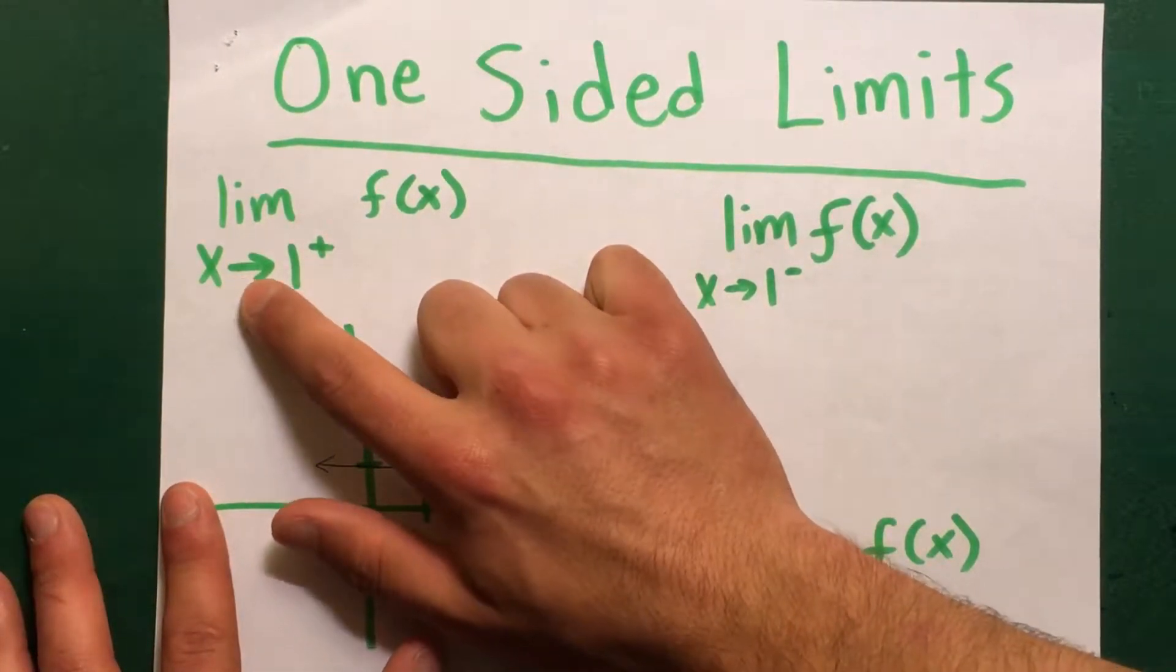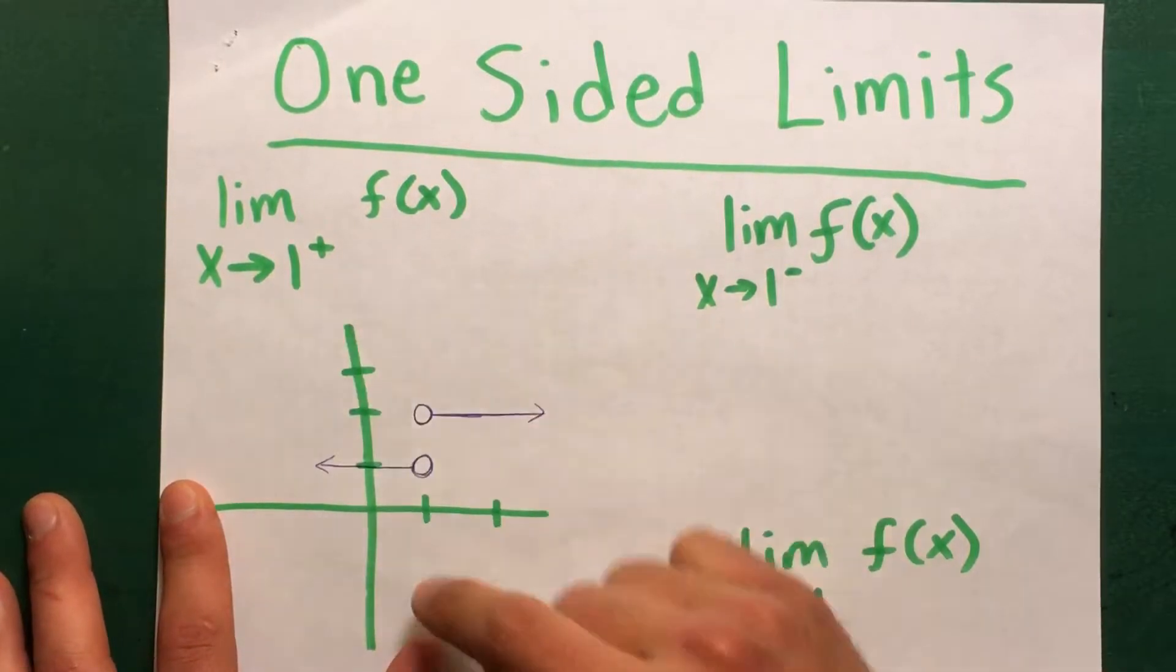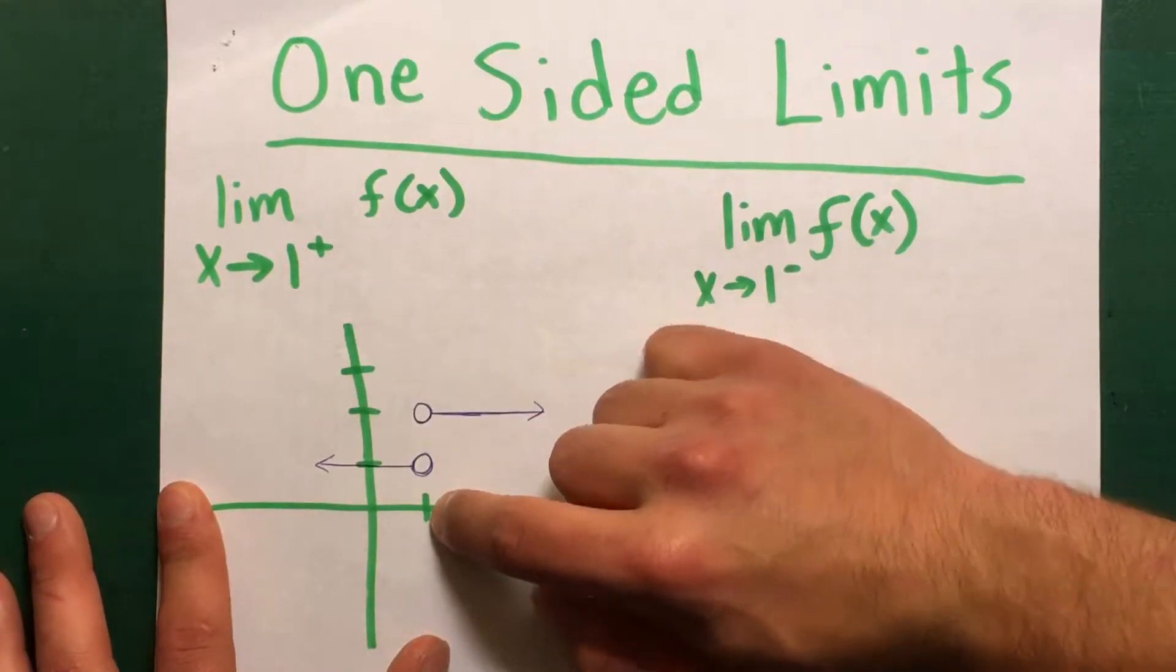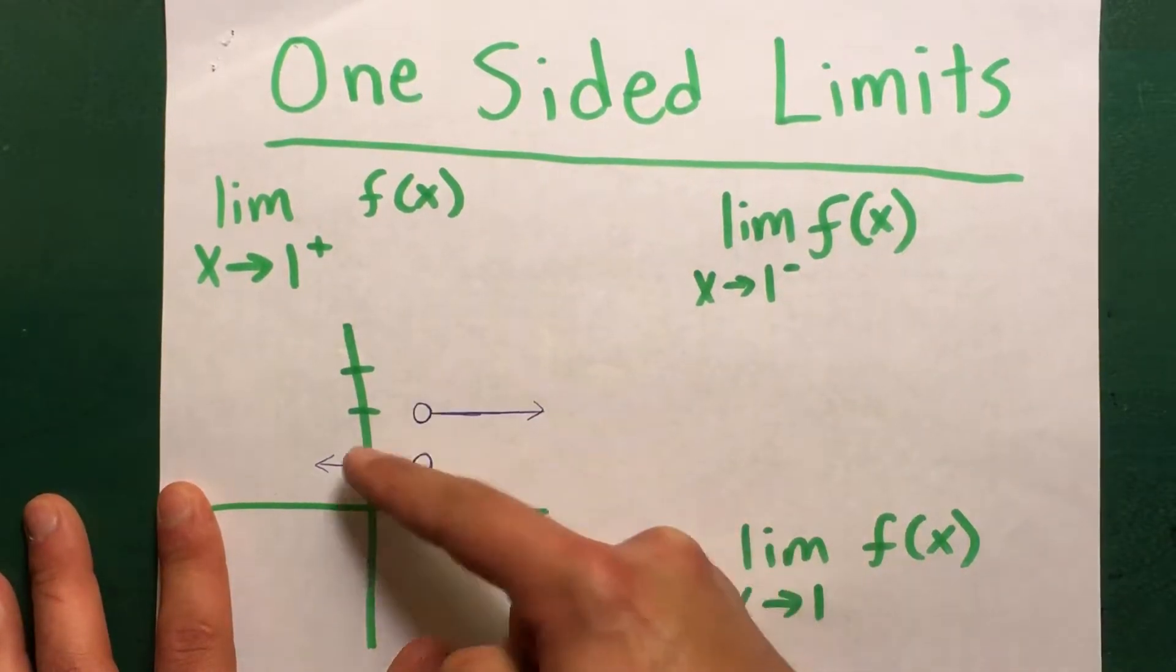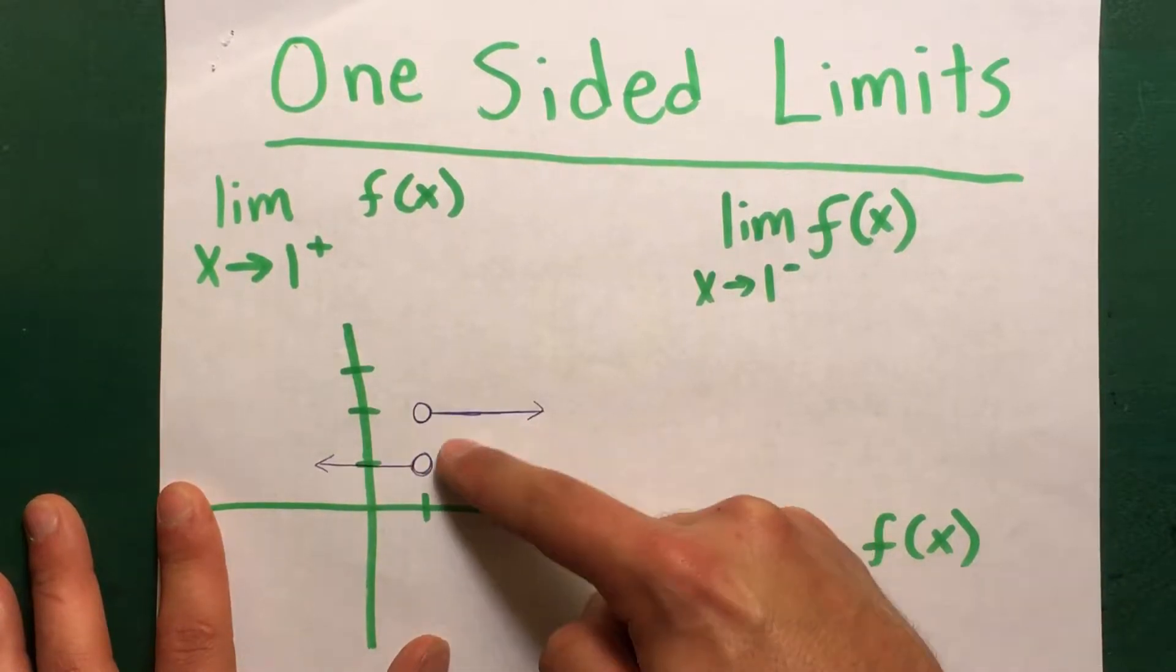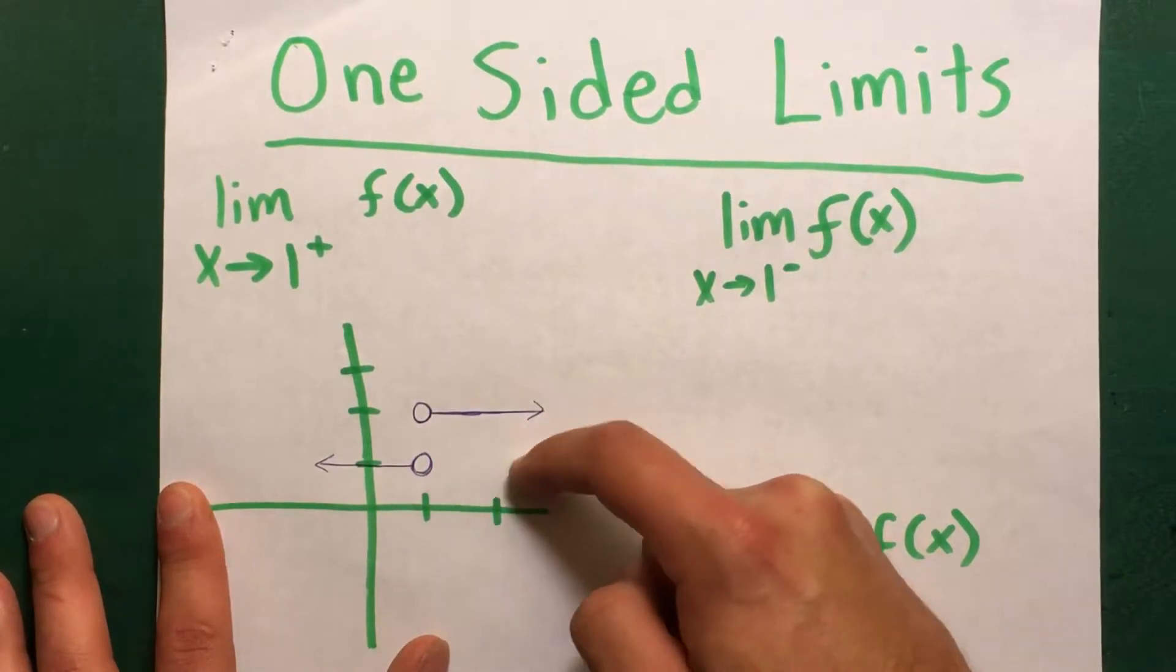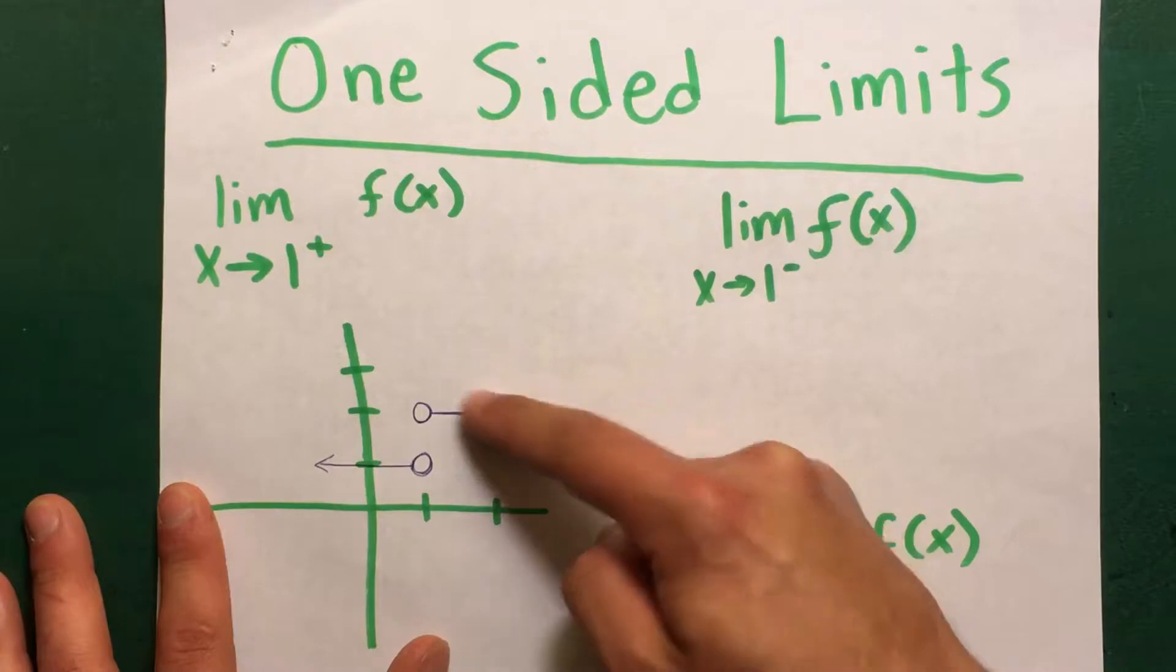So first of all, you look at this, x approaching 1 from the right. So where is 1? 1 is right here. And then coming from the right, you can't look at this because right here it's empty. It's not defined on the right side here of 1. So you have to look at this function right here.